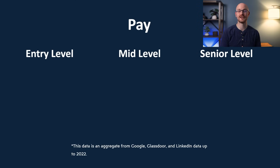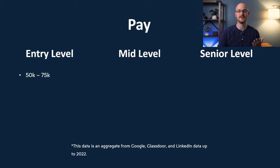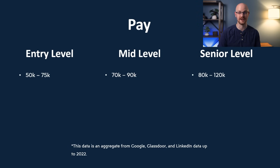The last thing we're going to take a look at is the pay. As you go from entry level all the way up to senior level, you should be expecting more money. For an entry level analyst, you're looking at anywhere from $50,000 to $75,000. For a mid-level, anywhere from $70,000 to $90,000. And for a senior level, anywhere from $80,000 to $120,000. These are just averages — it depends on where you live, your years of experience, your education, and other factors. But in general, these numbers are quite accurate.